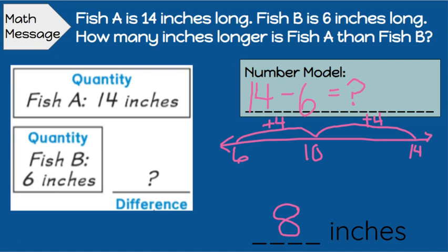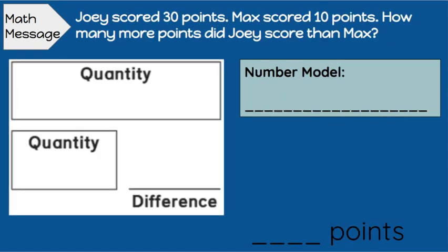Let's do another one. Joey scored 30 points. Max scored 10 points. How many more points did Joey score than Max?